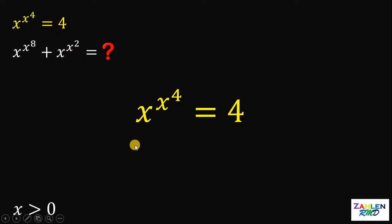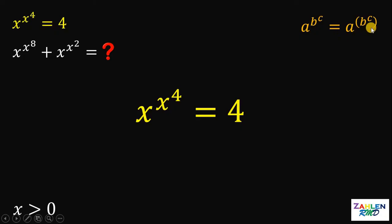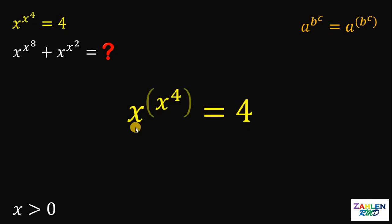One thing to take note on this kind of question is if we have a raised to b raised to c, this is equivalent to a raised to the quantity b raised to c — that is, a quantity raised to the power of b raised to c. Therefore, the left-hand side x raised to x raised to 4 can be written as x raised to the power of x raised to the fourth power.